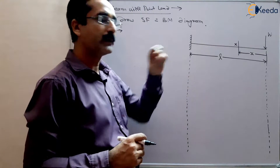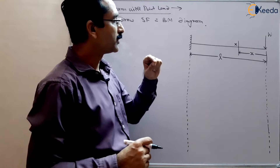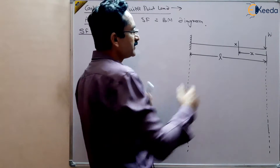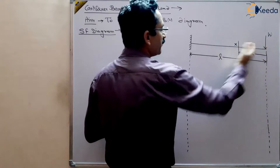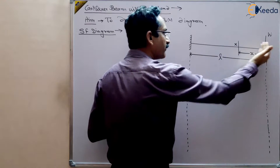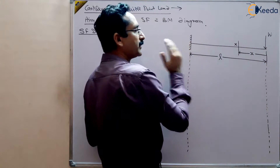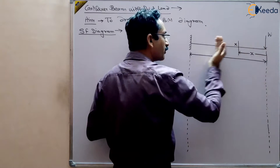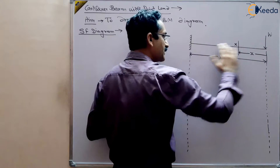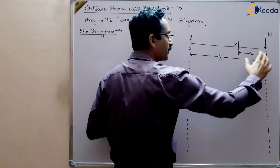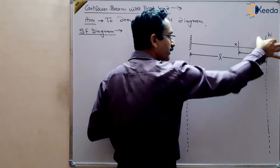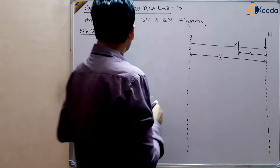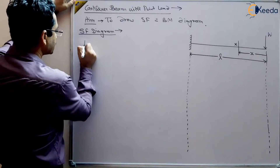Based on that, we will be able to draw the shear force diagram. As there is no force in between, the equation will be valid for the entire beam because there is no other load on any part of the beam other than this point load. So, what will be FX?